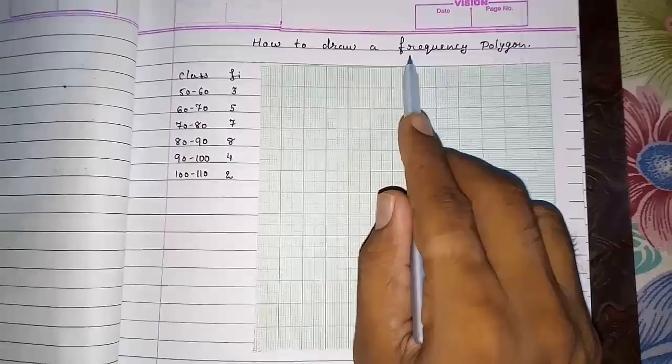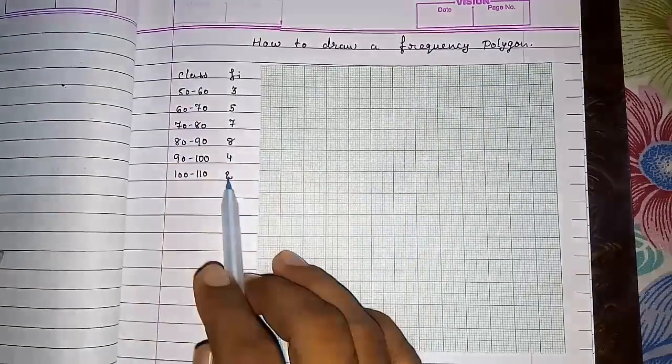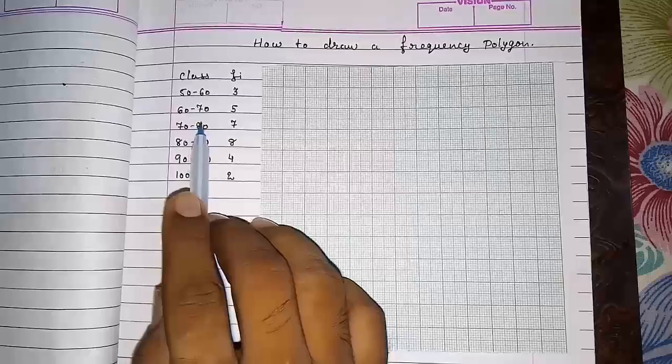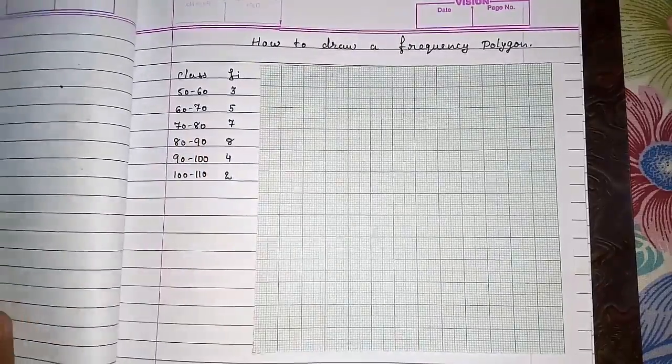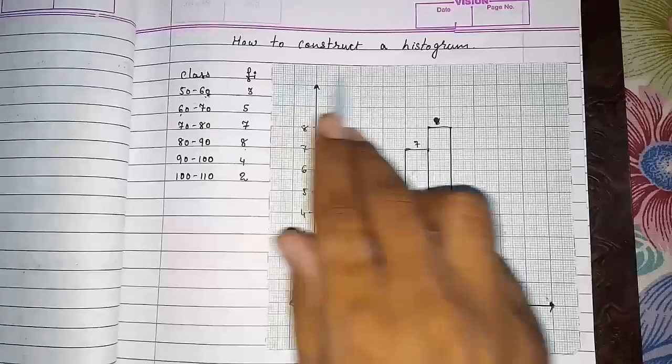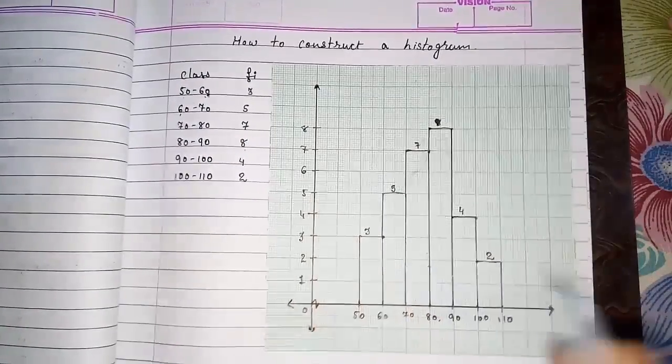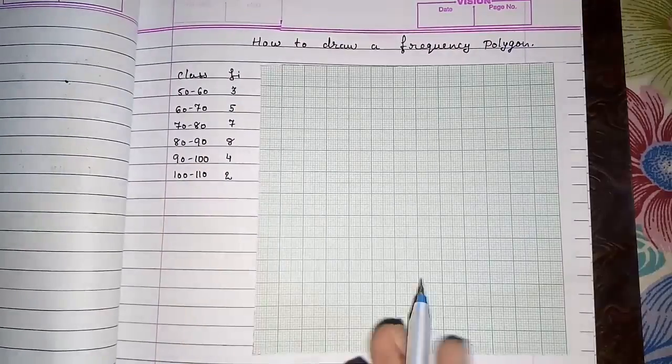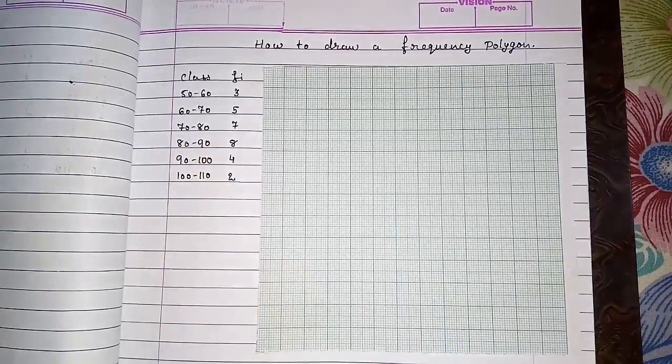Now, how to draw or construct a frequency polygon when class and frequency are given to you. The same class and frequency I had represented in my previous video on how to construct a histogram. So we come to know that from this data we can construct a histogram also, and we can construct a frequency polygon when classes and frequencies are given to you.